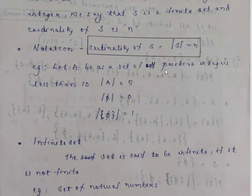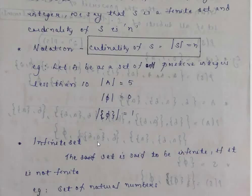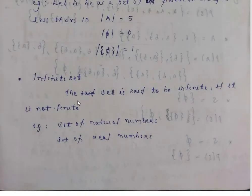Example: Let A be the set of odd positive integers less than 10. The odd positive integers less than 10 are 1, 3, 5, 7, 9.